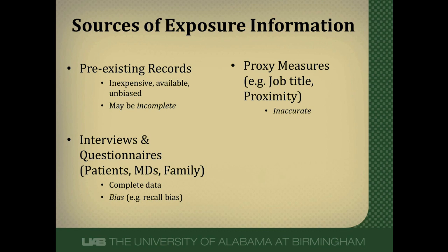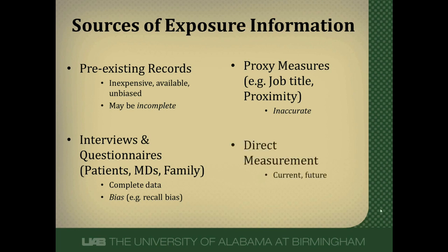Another way to get information is through proxy measures, where we try to estimate an exposure — for example, by using a job title to identify people likely exposed to radiation. If there's a chemical spill at a plant, we might use proximity measures like a mile radius around the plant, but these can be inaccurate. Finally, we could do direct measurement, which is often the best, but sometimes it's not available — for instance, in a retrospective study you often can't go back and directly measure a past exposure.